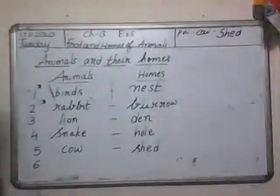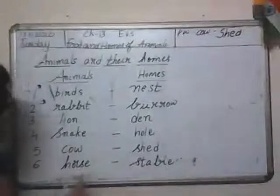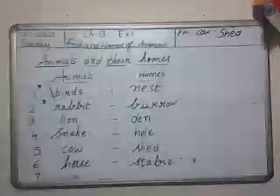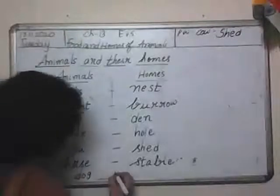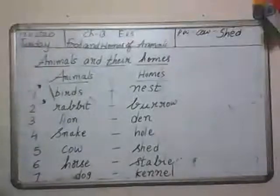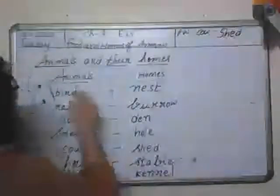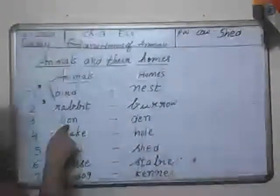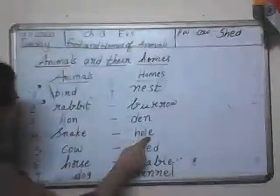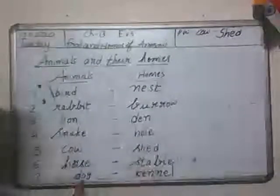Horse — H-O-R-S-E — lives in a stable: S-T-A-B-L-E. And the last one: dog lives in a kennel — K-E-N-N-E-L. So to recap: bird lives in nest, rabbit lives in burrow, lion lives in den, snake lives in hole, cow lives in shed, horse lives in stable, and dog lives in kennel.